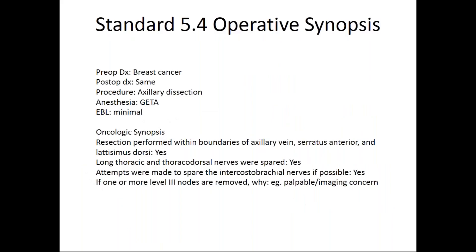Here is an operative synopsis — at the top showing the typical operative synopsis, and at the bottom showing the anatomic landmarks, that the nerves were spared, and that attempts were made to spare the intercostal brachial nerve, and whether or not one or more level 3 lymph nodes were removed and why.